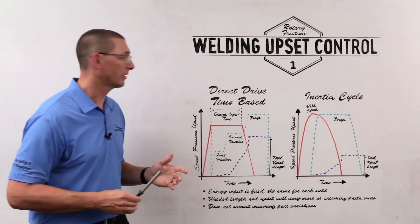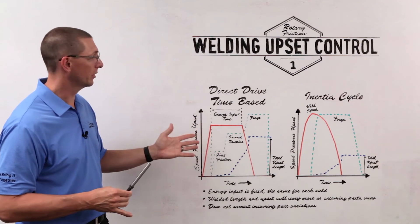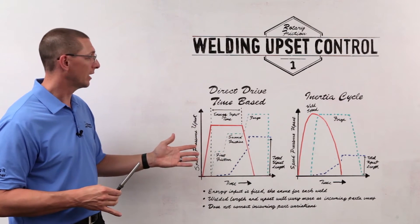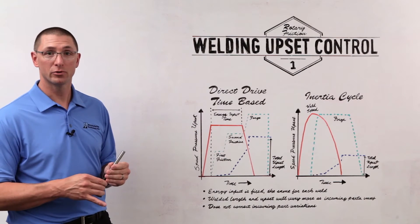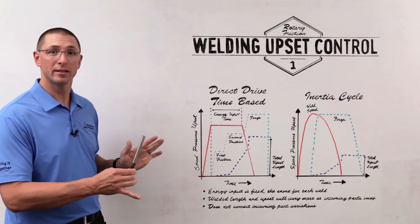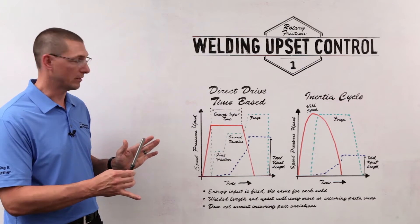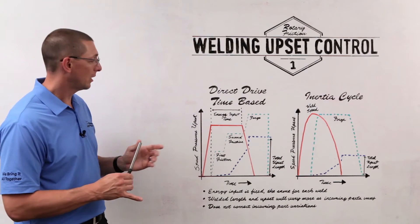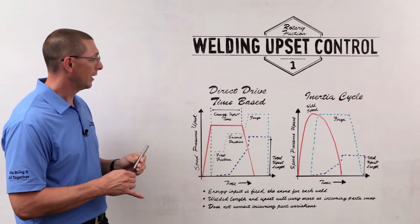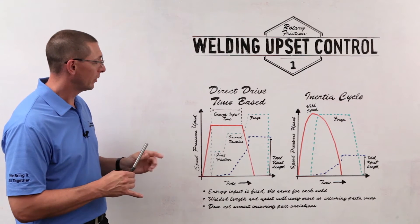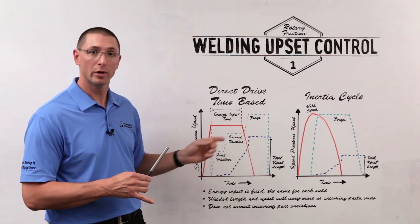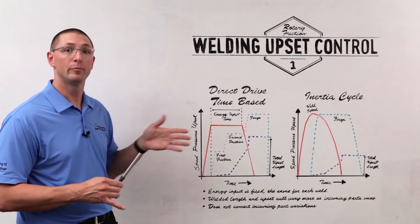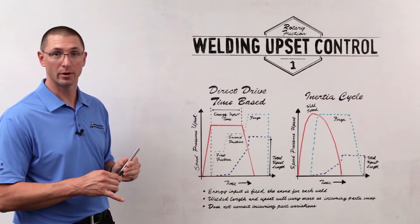Now in rotary friction welding there are two main types: direct drive and inertia. Within direct drive, if I'm using a time-based control system, then I have a fixed amount of energy. The energy input comes from the spinning electric motor and the rotating component. So if I'm controlling how long I rotate for a specific amount of time, then I'm putting the same amount of energy into the part every time.